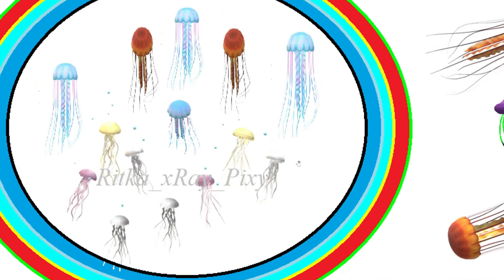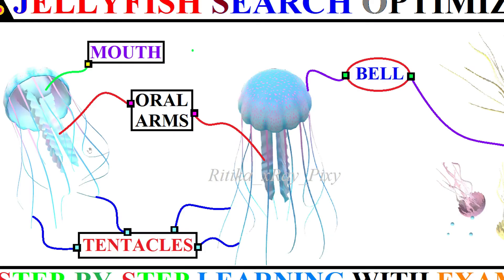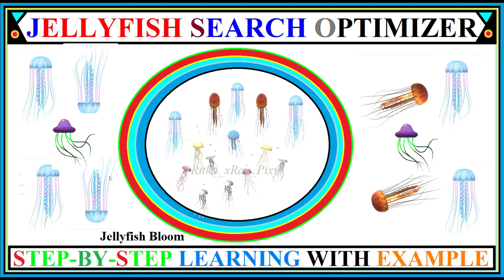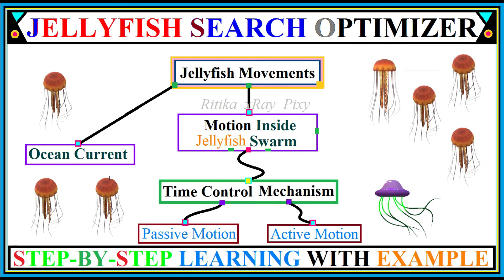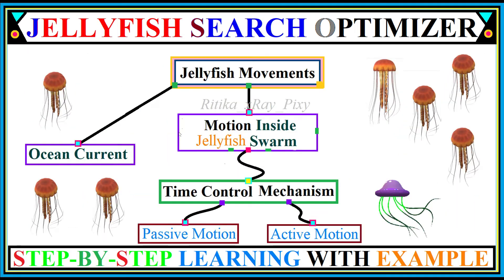A large mass of jellyfish is known as a jellyfish bloom. They are considered dangerous due to their long stinging tentacles, which contain poison. Some jellyfish species are dangerous to human lives. Jellyfish can control their movements when conditions are favorable and can form a swarm, also called jellyfish bloom. Jellyfish movements involve ocean current, and motion inside the jellyfish swarm uses a time control mechanism to control their motion.